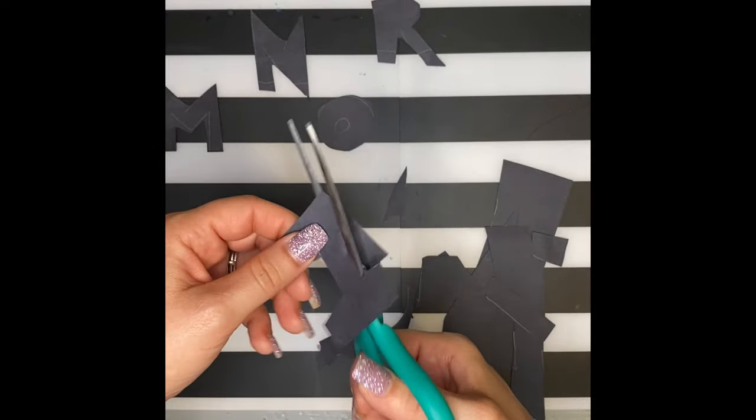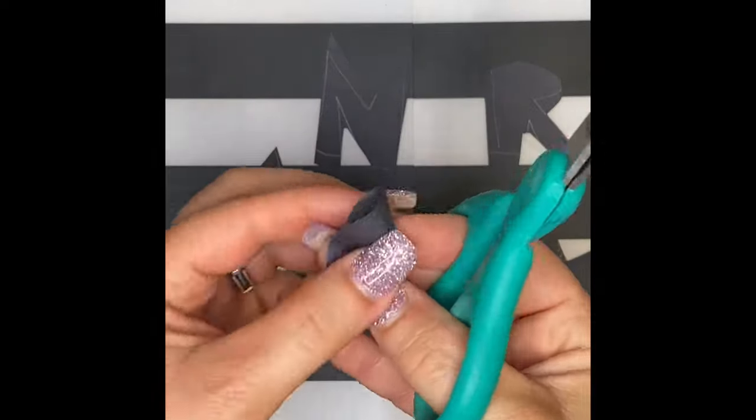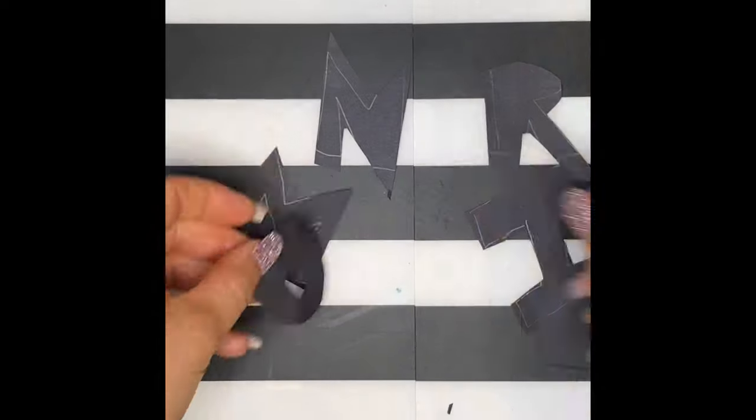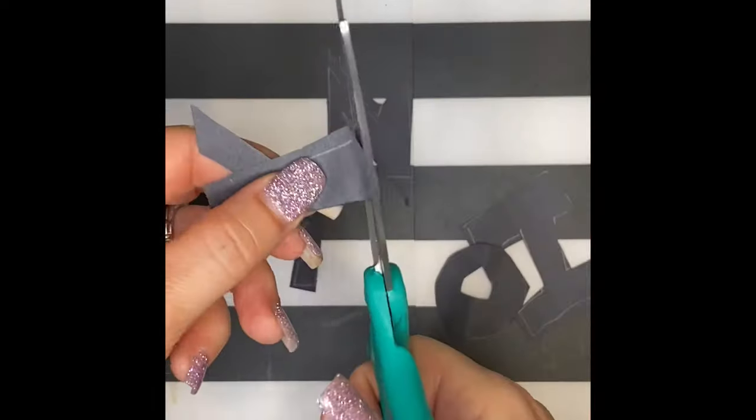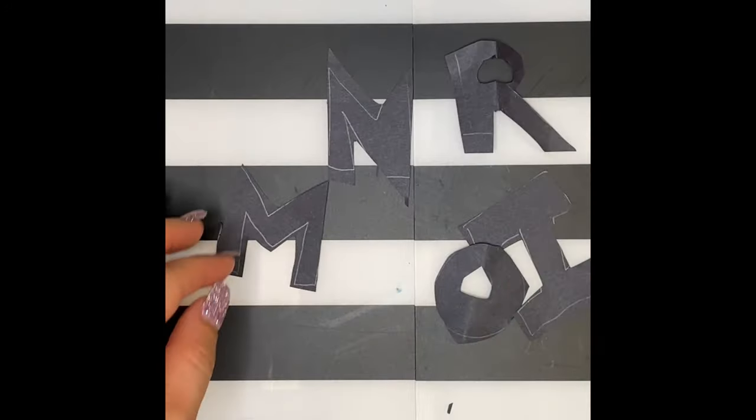When you're done cutting out your letters, clean up all your paper scraps. Next, if your letters have any holes in them, like an O or an R or B, you've got to try to figure out a way to get those out. One way is to fold the paper in half and make a small cut. And there you have it. You've got a hole in your center.